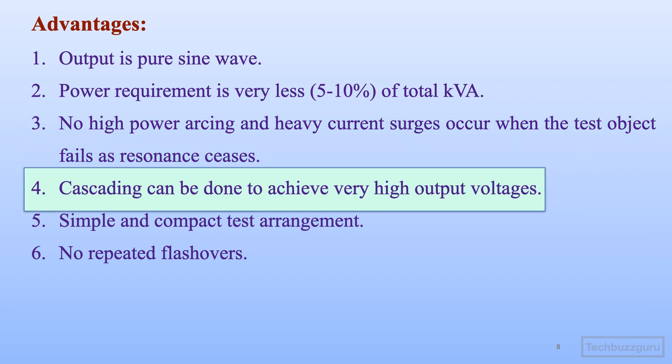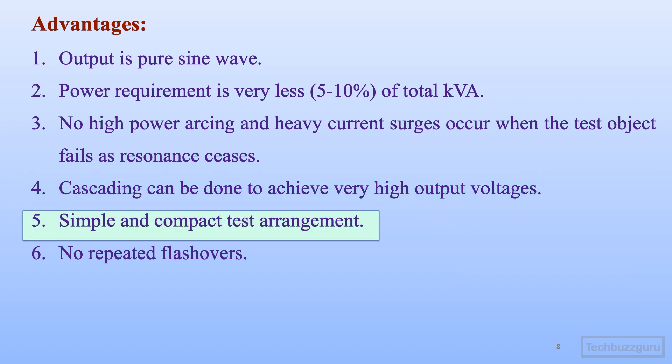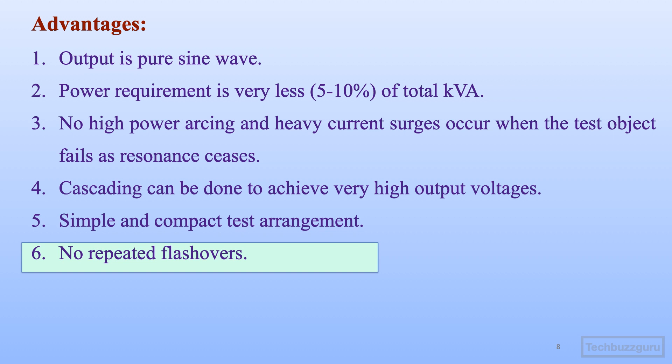Fourth, if voltages higher than those from a single-stage resonant transformer are needed, cascading can also be achieved to obtain very high voltages. Fifth, the test arrangement is very simple and compact, with only two or three elements involved. Lastly, no repeated flashovers are observed when testing is done using resonant transformers.